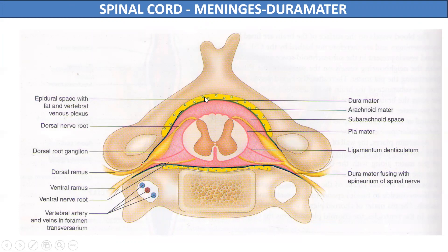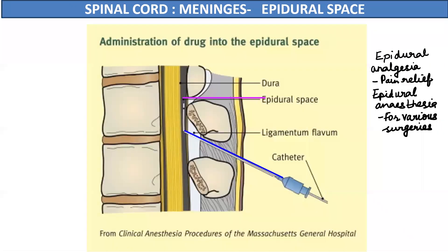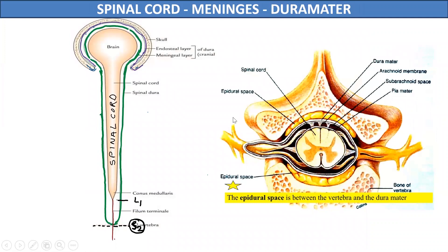Clinically, the epidural space can be utilized for injecting anesthetic or analgesic drugs. This type of epidural analgesia is used for pain relief during childbirth — in painless labor or delivery — and also for pain relief in cancer patients. Epidural anesthesia can also be used in various surgeries in the gynaecology and obstetrics department. So the dura mater around the spinal cord is single-layered without any folds, continues up to the second sacral vertebra, and has an epidural space outer to it which is used for analgesia and anesthesia.